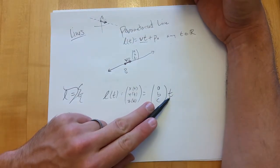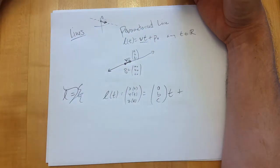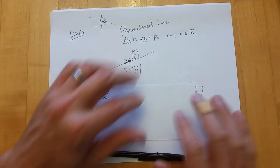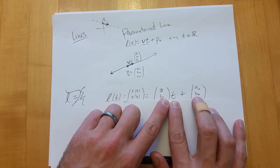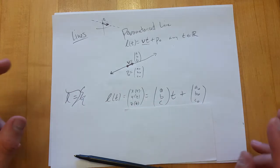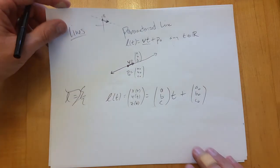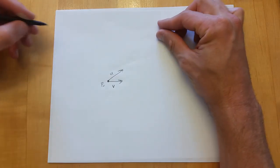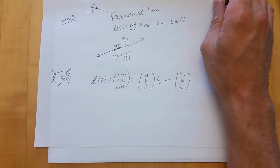In vector form, a line in three-dimensional space: l(t) has three components, x, y, z, all functions of t. So l(t) = [x(t), y(t), z(t)] = [a, b, c]·t + [a0, b0, c0], where [a, b, c] is the direction vector v and [a0, b0, c0] is any point on the line.